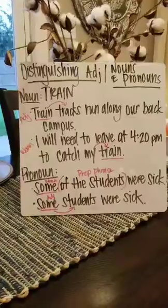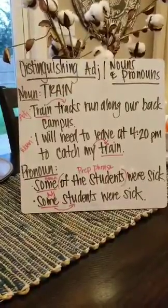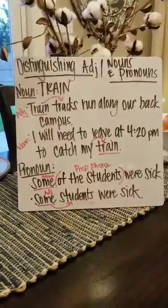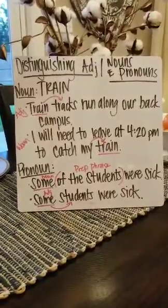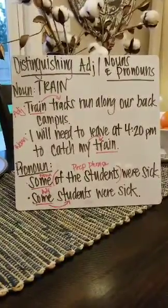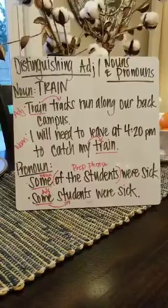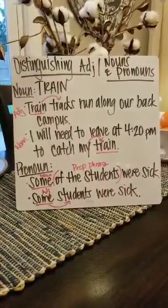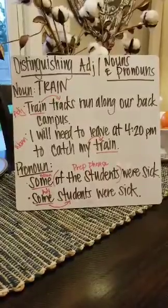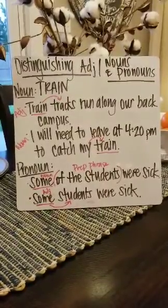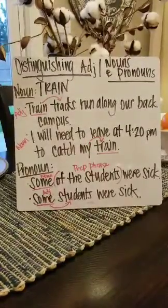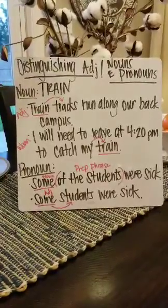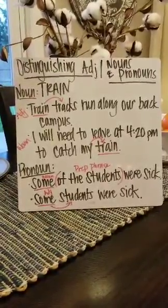In the second part, I'm going to show you how to distinguish an adjective from a pronoun, and I'm going to use the word 'some.' In the first example, 'some of the students were sick,' the word 'some' is functioning as a noun because in this sentence, 'some' is actually our subject. We know that 'of the students' is a prepositional phrase, and the subject will never be found in the prepositional phrase. So 'some' is our subject, therefore making it a noun.